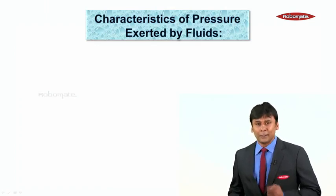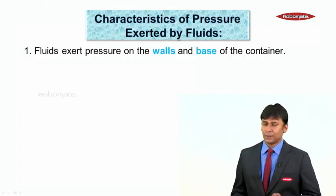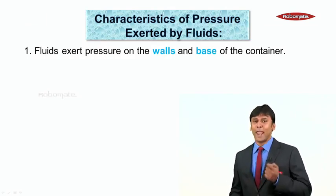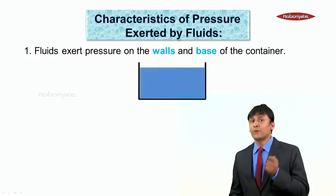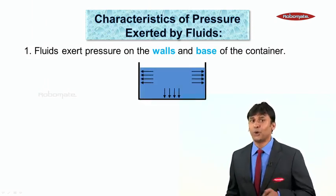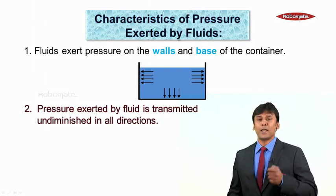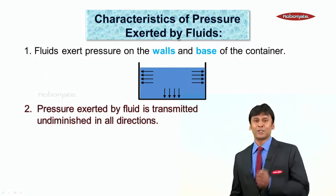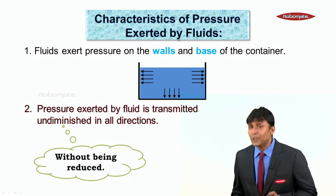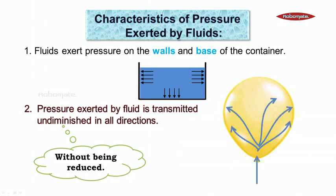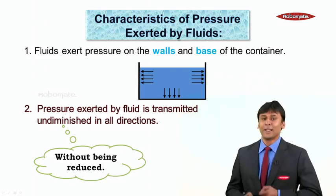Now let us see what are the characteristics of pressure exerted by fluids. The first characteristic is: fluids exert pressure on the walls and base of the container. That is, if you put a fluid into a container, it will exert pressure on the walls and the base. The second characteristic is: pressure exerted by fluid is transmitted undiminished in all directions. Undiminished means without being reduced. That is, if you put a fluid — that is, air — into a balloon, the pressure will be transmitted undiminished in all directions.